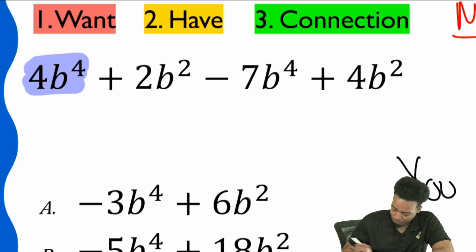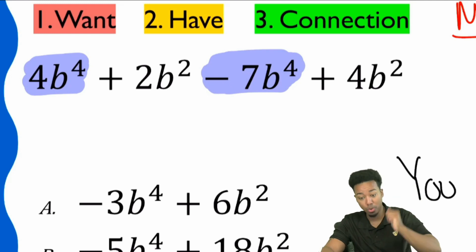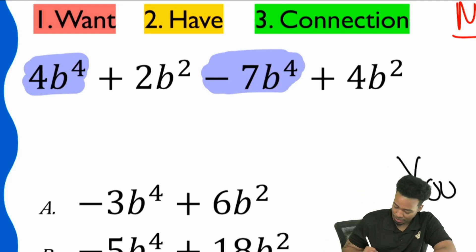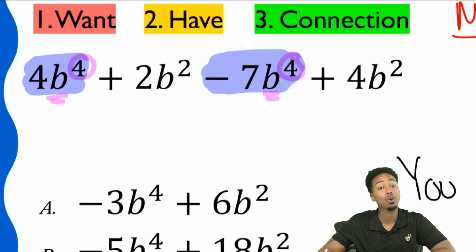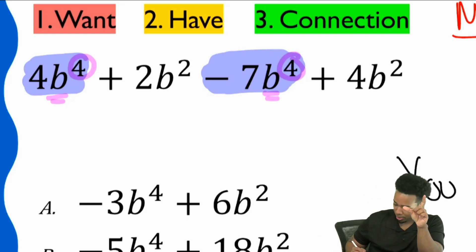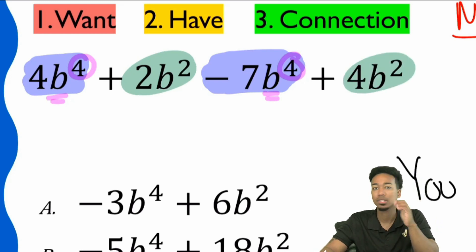4B to the power of 4 and the negative or minus 7B to the power of 4, those are like terms. Those are because we have the same B and we have the same exponent, the 4 right there. That's what makes these like terms. They have the same variables, letters, and the same exponents. Does that make a little more sense now, especially when I highlight these two as being like terms as well? Same letters, B, same exponents, 2.